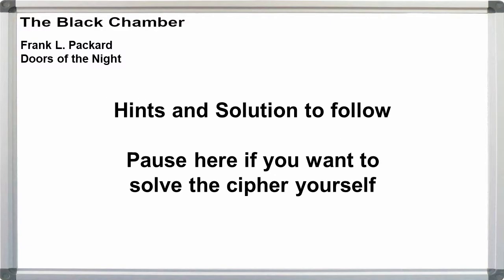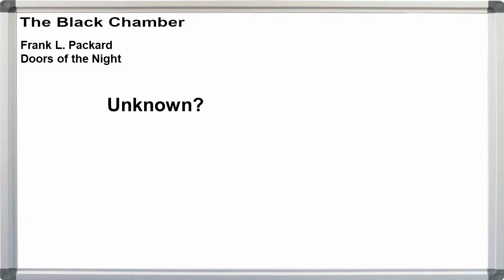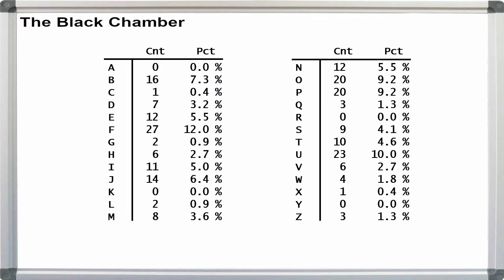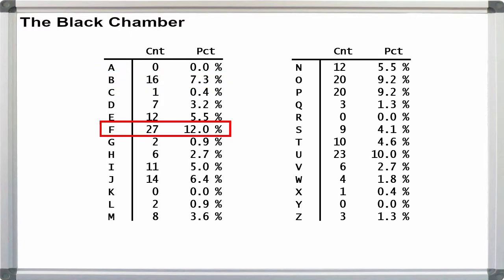Pause here if you want to try solving this cipher on your own now. If we treat this as an unknown, the first step is to run a frequency count on the letters. Pause here if you want to do the letter count on your own. We have peaks at B with 16, F with 27, and U at 23.